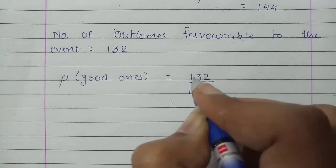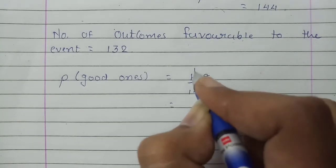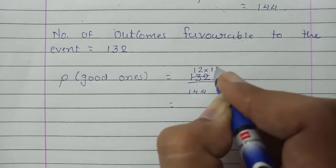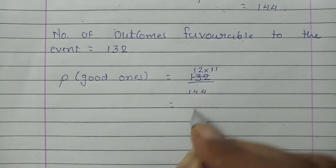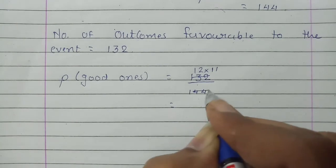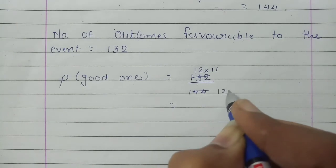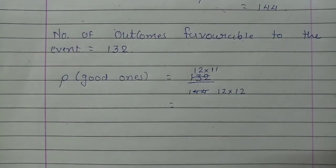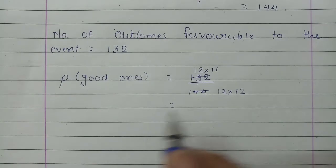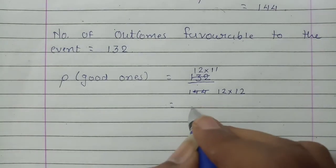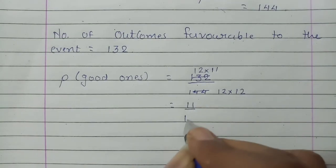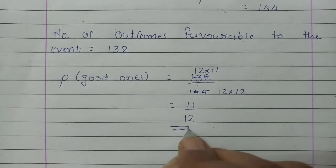Now let us reduce this fraction. 132 divided by 12 is 11, and 144 divided by 12 is 12. So the probability of getting a good pen is 11 upon 12.